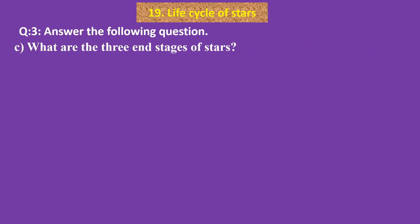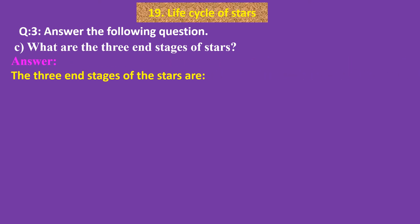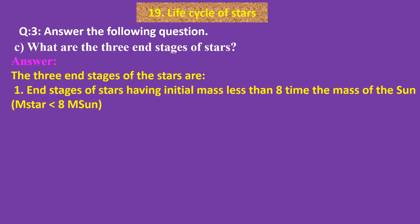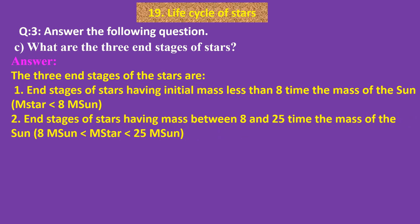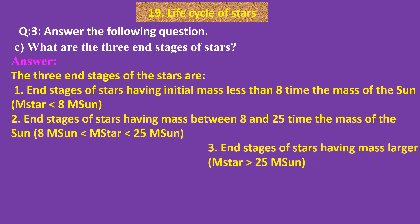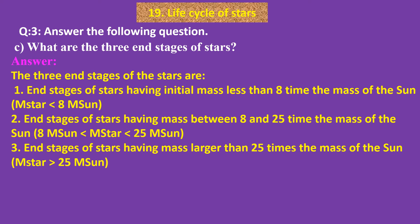C. What are the three end stages of stars? Answer: Stars are grouped by mass. First: stars with mass less than 8 times the mass of the sun (mass of star < 8 solar masses). Second: stars with mass between 8 and 25 times the mass of the sun (8 solar masses < mass of star < 25 solar masses). Third: stars with mass greater than 25 times the mass of the sun (mass of star > 25 solar masses).